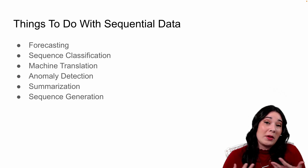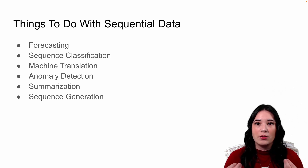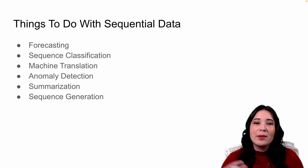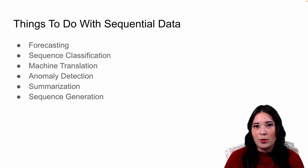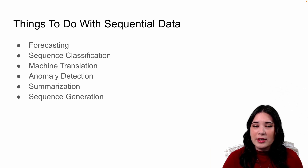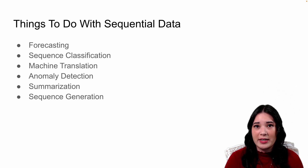What are some things we might want to do with sequential data? The first and most common one is forecasting — when we look at a time series or sequence of data over time and try to predict what the next time point will be. For example, we could predict what the price of Apple stock is going to be 10 days from now. Next, we might want to take a sequence and classify it. For instance, we could take a string of text and try to classify who the author is.